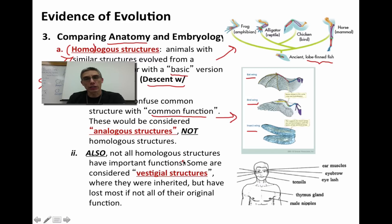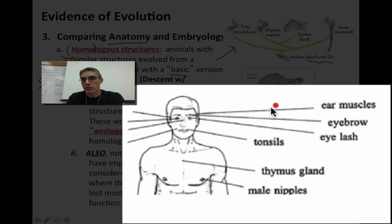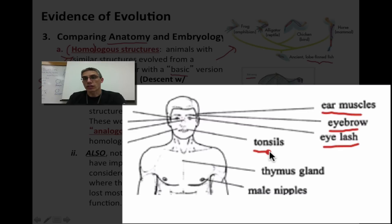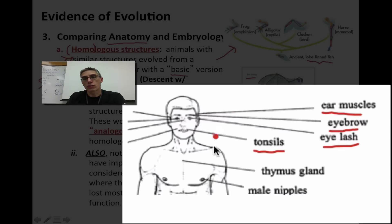Not all homologous structures have important functions. Many are considered vestigial, meaning they are inherited but the structure has lost most or all of its original function. For example, humans have muscles in our ears — some people can even move their ears — but we're not sure what advantage that provides. Other vestigial structures include eyebrows, eyelashes, tonsils, the thymus gland, and male nipples. Men don't nurse their young, so there's no clear function. These are all vestigial structures: still present and passed to offspring, but with no real function in the living organism.